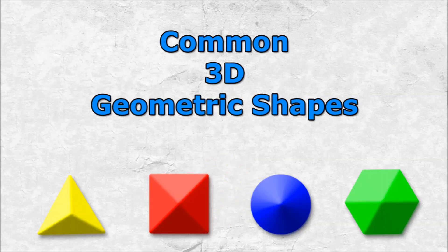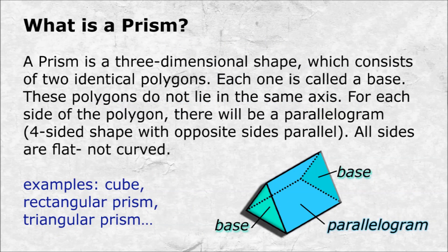Common three-dimensional geometric shapes. Let's start with the word prism. A prism is a three-dimensional shape which consists of two identical polygons, each called a base. These polygons do not lie in the same axis. For each side of the polygon, there will be a parallelogram — a four-sided shape with opposite sides parallel. All sides are flat, not curved. Examples include the cube, rectangular prism, and triangular prism.